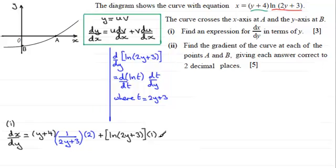So that's essentially dx dy. But I think we ought to tidy it up. So we'll just say that this equals, now for this first term here, we can write this as 2 lots of y plus 4, 2 lots of y plus 4. And that's all divided then by 2y plus 3.